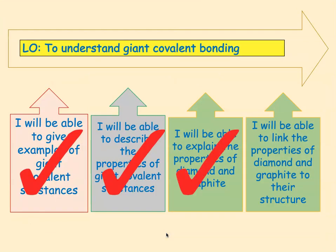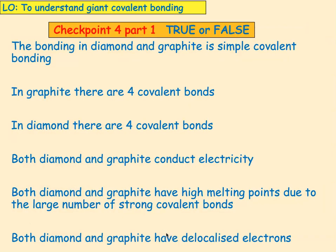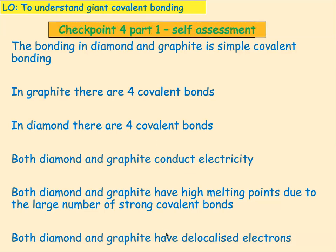That's our third success criteria. We need to look at the last one: to be able to link the properties of diamond and graphite to their structure. Pause the video and write down true or false for each of these statements. The bonding in diamond and graphite is simple covalent bonding — that's false, it's giant covalent. In graphite there are four covalent bonds — that also is false, there's only three.